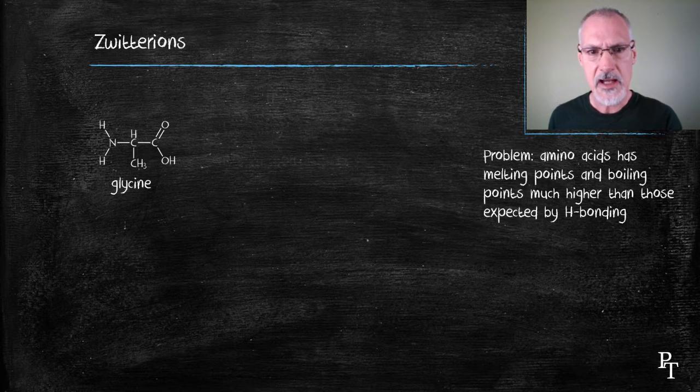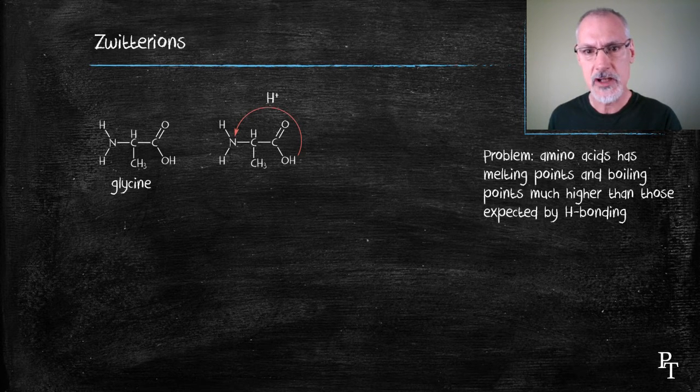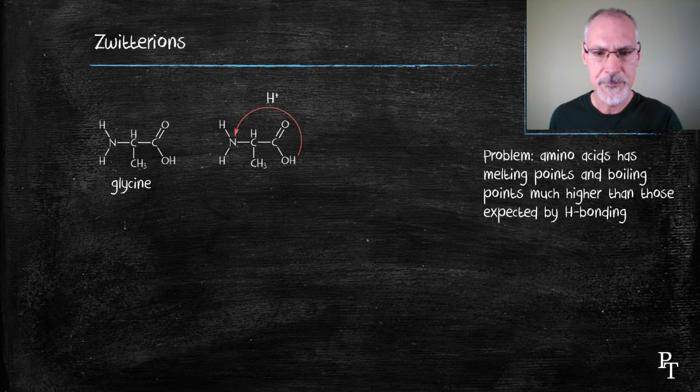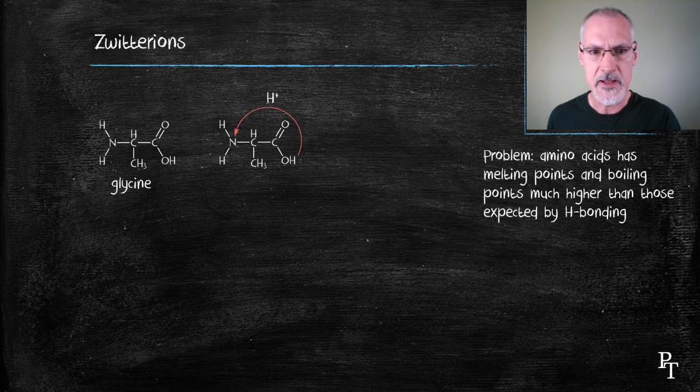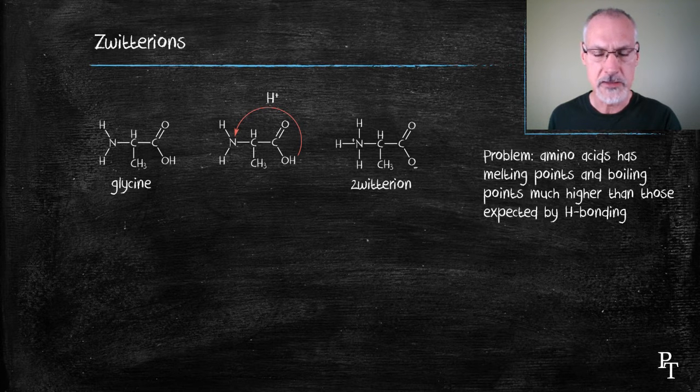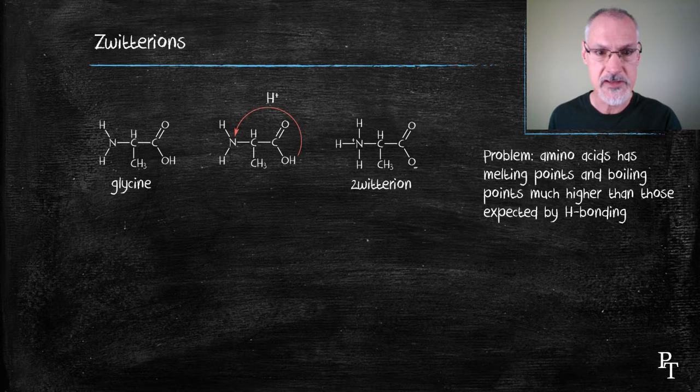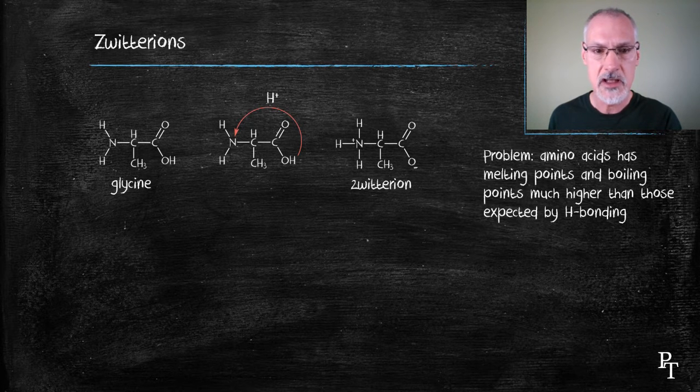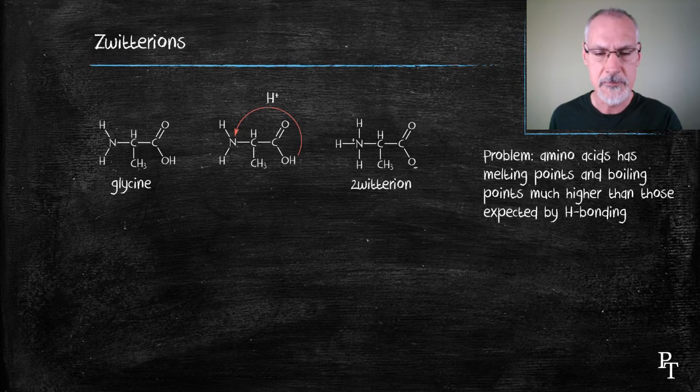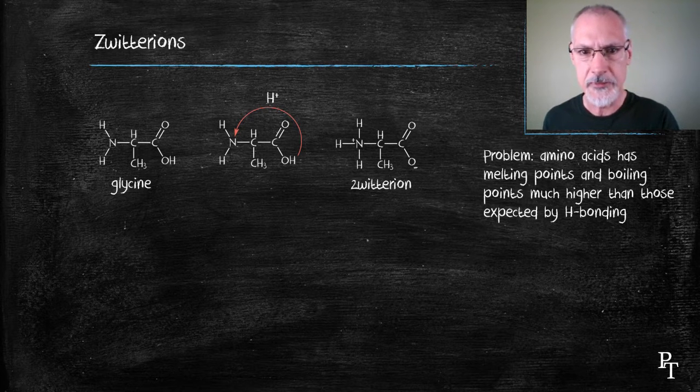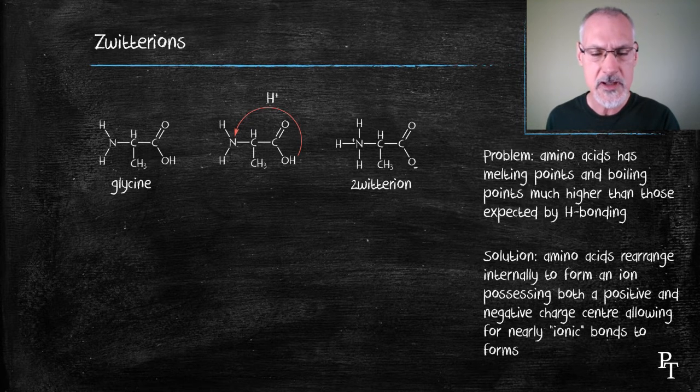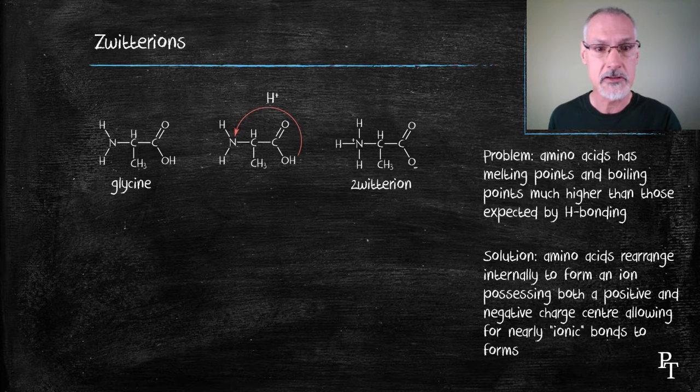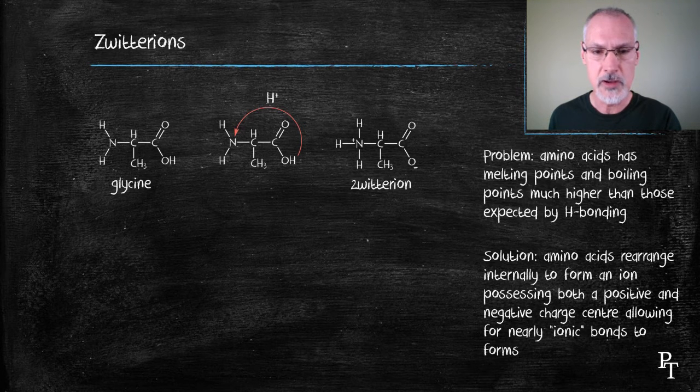What is believed to happen is the hydrogen, leaving its electron behind, bonds with the unbonded pair of electrons that are present in nitrogen. This would then result in the formation of a polar molecule which has complete positive and negative charges at one end and the other. A negative charge exists at the oxygen and a positive charge would exist at the nitrogen. This would allow the molecules to essentially make ionic bonds between each other, and those ionic bonds would be much stronger than hydrogen bonding and as a result could explain the higher melting and boiling points.